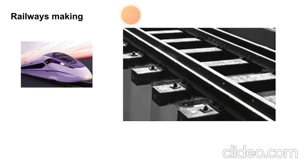Some parts of the railway are made from composites — the body and some railway parts are made by composites. There are various types of composites: metal matrix, polymer, and ceramic. Various types of composites are used in making the railway parts.